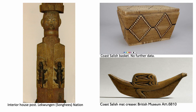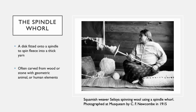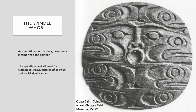Some of the most elaborate Salish wood carvings are on mat creasers and spindle whorls, both of which are important elements used in weaving. Although wood carving is highly developed in the Coast Salish region, basketry and textiles are a major art form. Wool and blankets woven from it function as a form of currency or wealth. Prior to the introduction of sheep, wool was mainly obtained from domesticated Salish wool dogs; dog hair was combined with goat wool, goose down, and plant matter like cattails in the spinning process. A spindle whorl is a disc fitted onto a spindle used to spin fleece into thick yarn, and it was often carved from wood or stone with geometric or human figures. As the disc spun, the elements were said to mesmerize the spinner and add to the spiritual and social significance of the textile being produced.